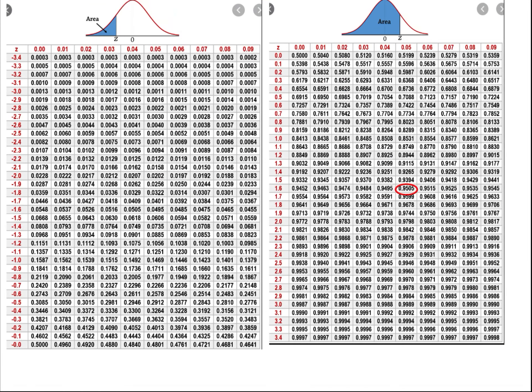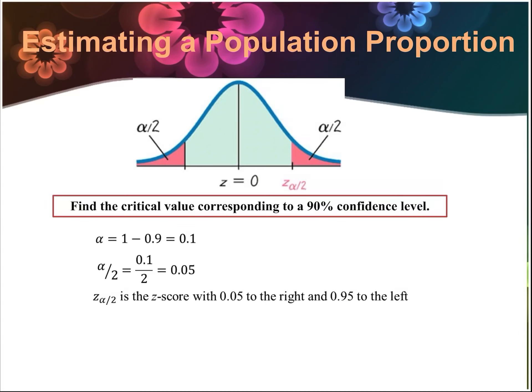0.95 is not exactly on the table — we have 0.9505 and 0.9495 right next to each other, so we split the difference. The row 1.6 is definitely correct. If you plug this into your TI-83 or 84 calculator, the value isn't exactly 1.65 — it's actually 1.645. Usually anything close to 1.645, like 1.64 or 1.65, will be fine. We'll use 1.645.